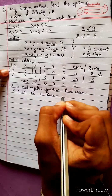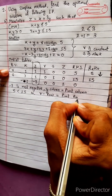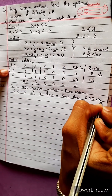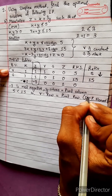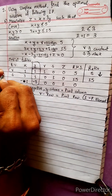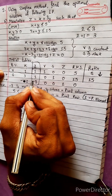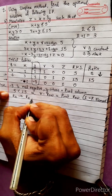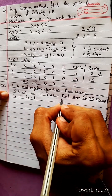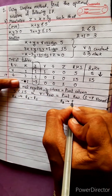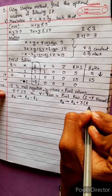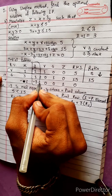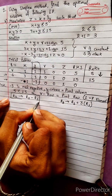So r row equals the pivot row. The pivot element is 1, which is already 1, so we don't need to divide. The pivot element is used to make other elements in the pivot column equal to 0. For the second row, apply R2 minus R1. For the third row, apply R3 plus 3 times R1 to make those entries 0.